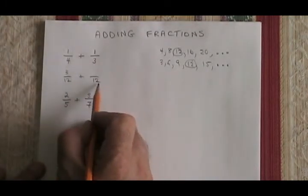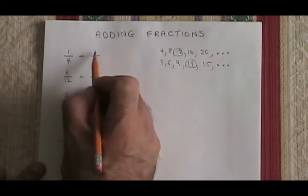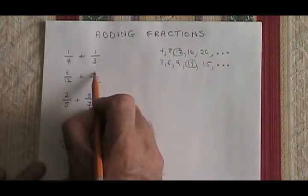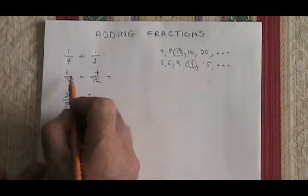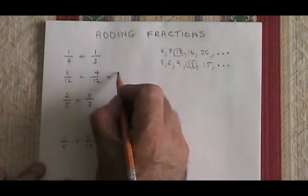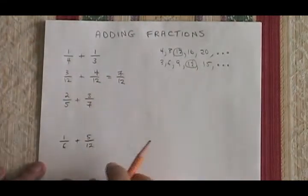If 3 is converted into 12 by multiplying it by 4, then the 1 on top has to also be multiplied by 4, and I have 4 twelfths. Now I can add 3 twelfths plus 4 twelfths equals 7 twelfths. I have my answer.